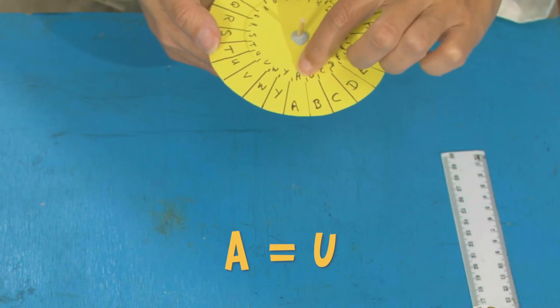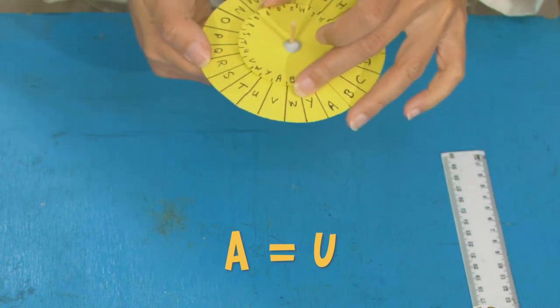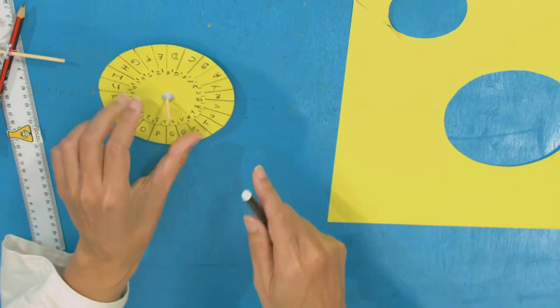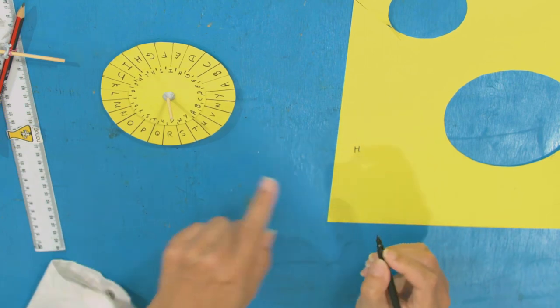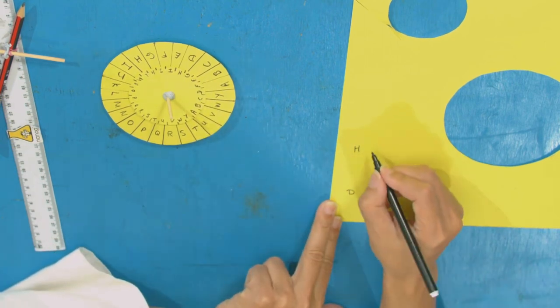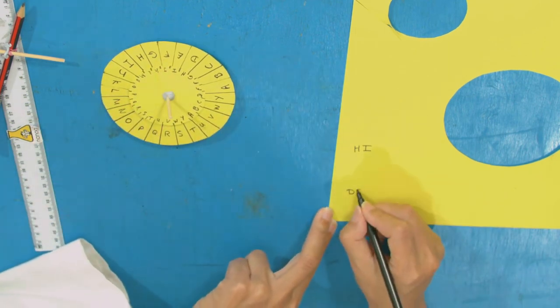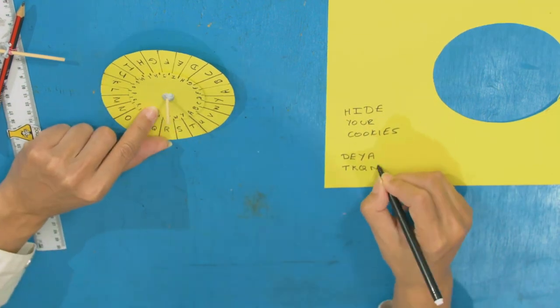I want my secret message to say hide your cookies so that my other superhero friends know that their cookies may be at risk. First you're going to need to decide on your key. My key is going to be A equals U, which means that my A here is going to equal A U here. That's the secret key. Then let's take the message hide your cookies and we're going to replace every letter with the new one from the codes. The first letter H aligns with the letter D. So where I would write a letter H, I'm now going to write the letter D. And I for hide is going to be the letter E. Keep going and work out your code.